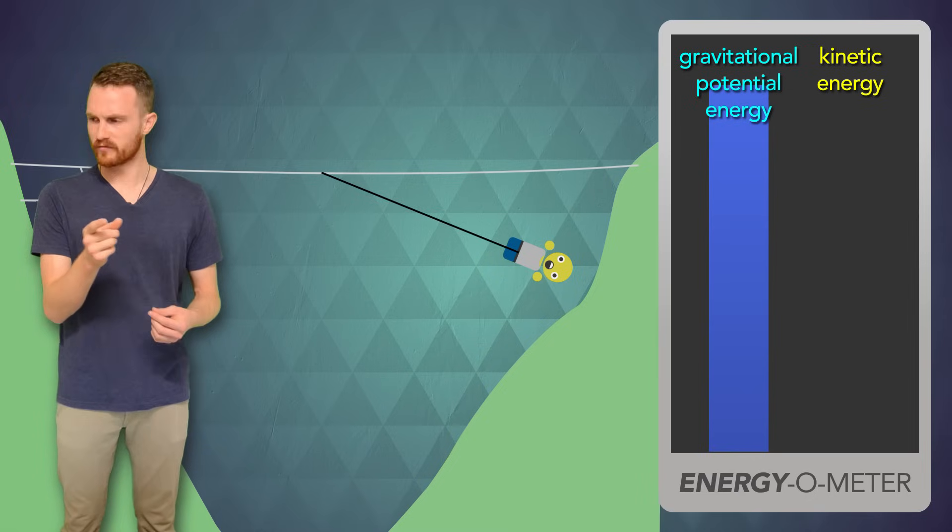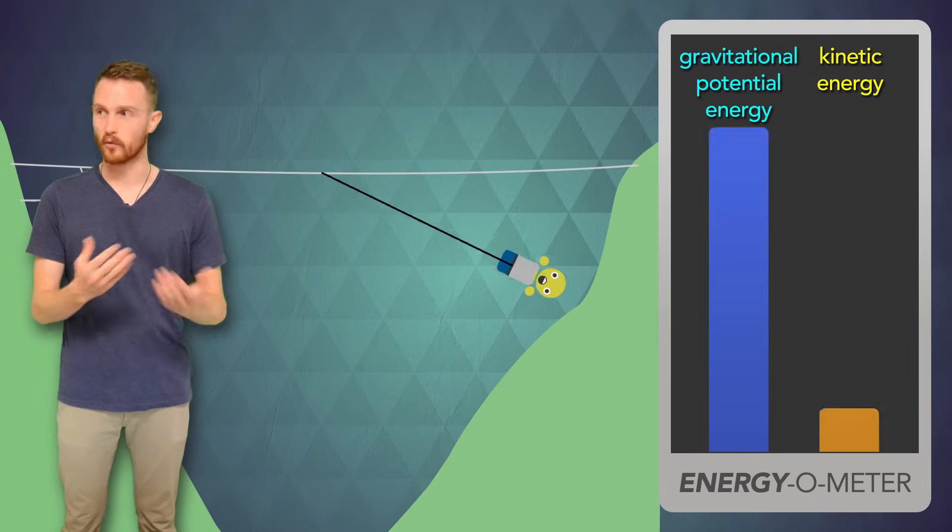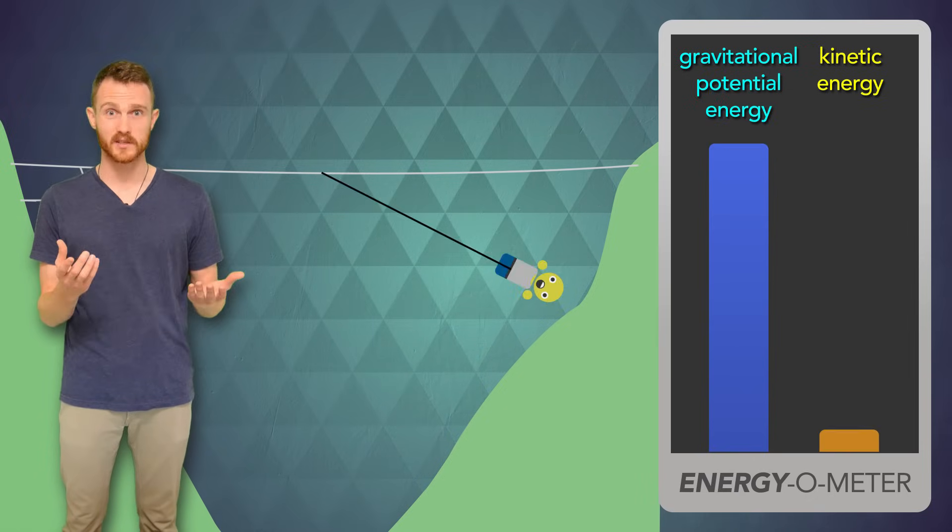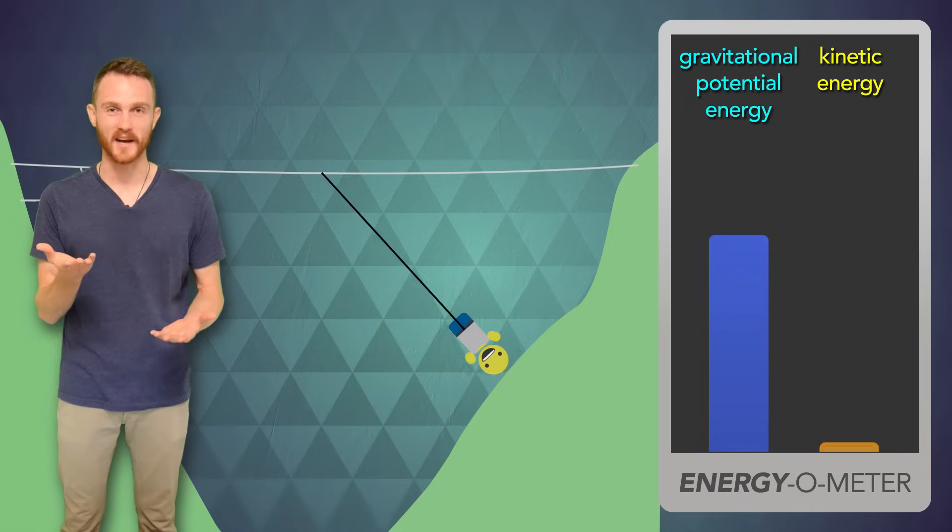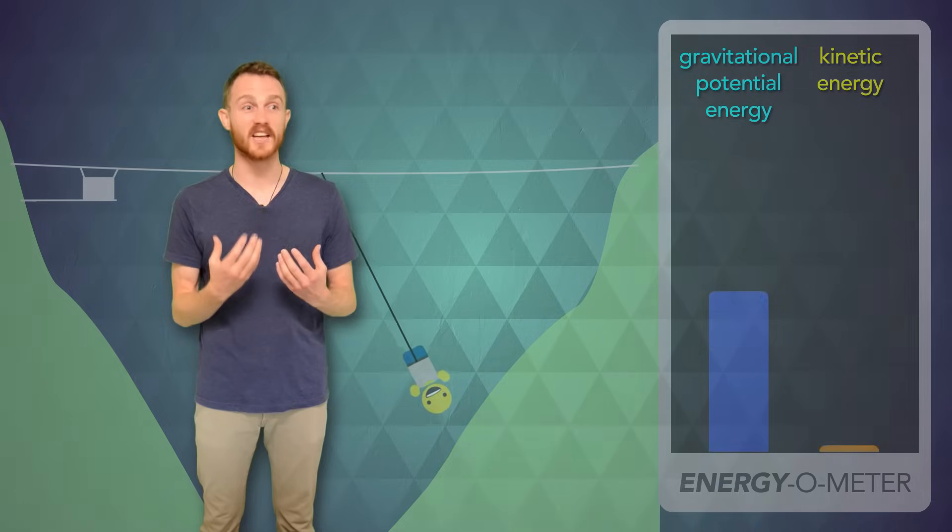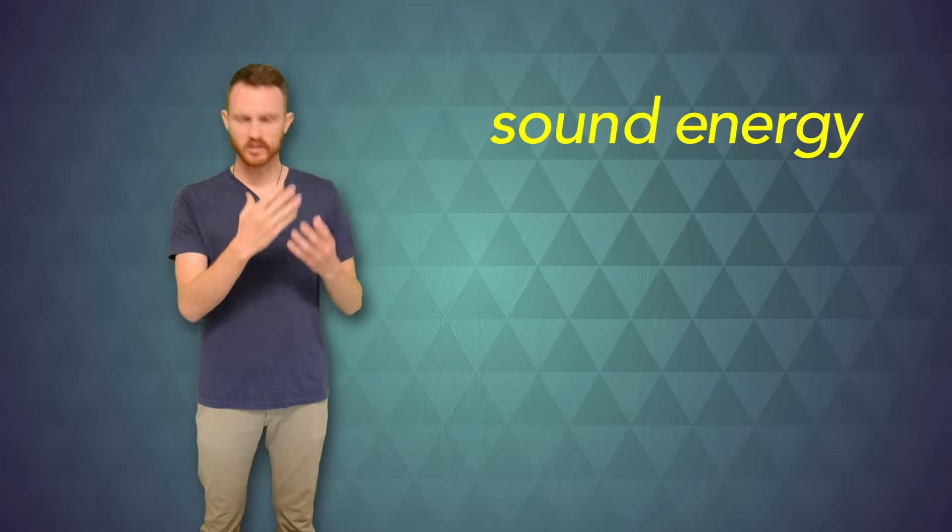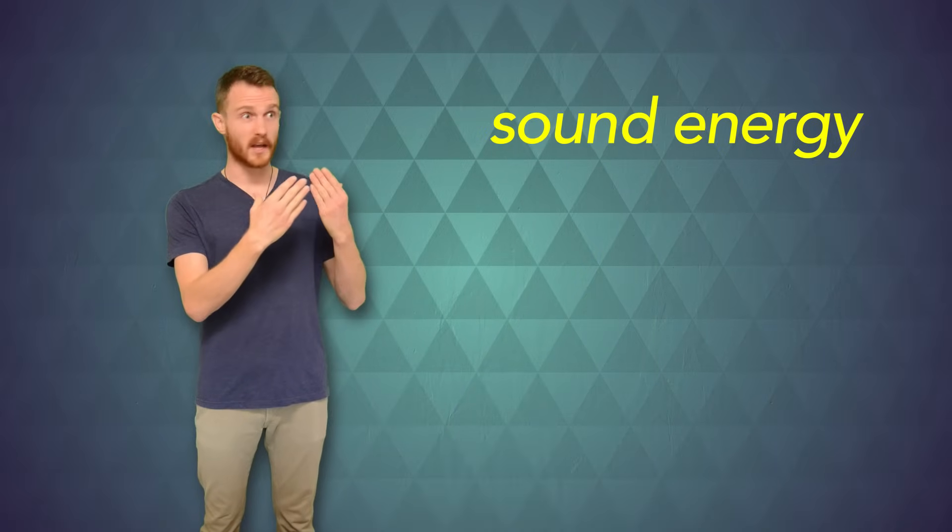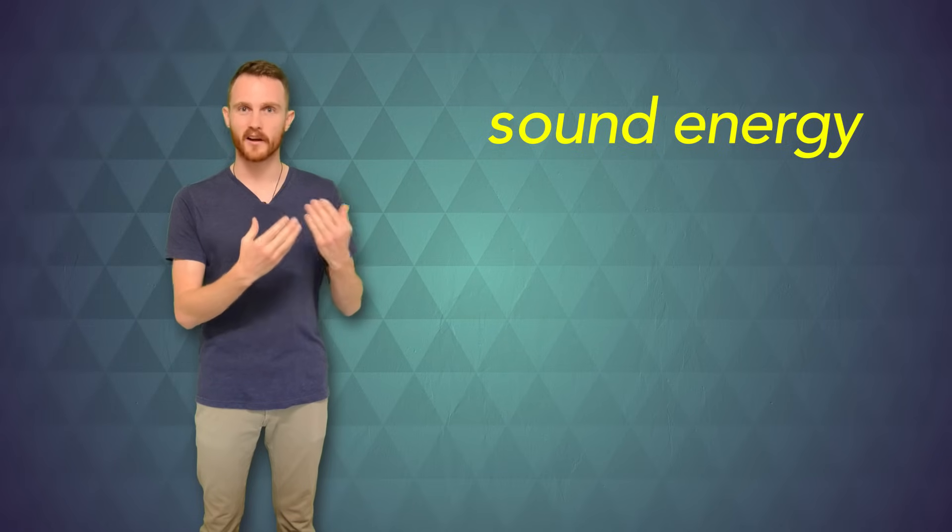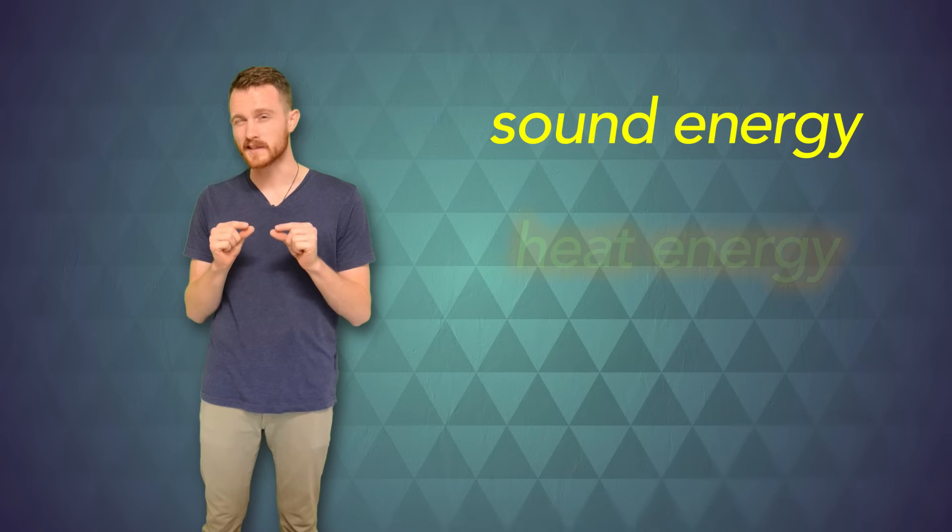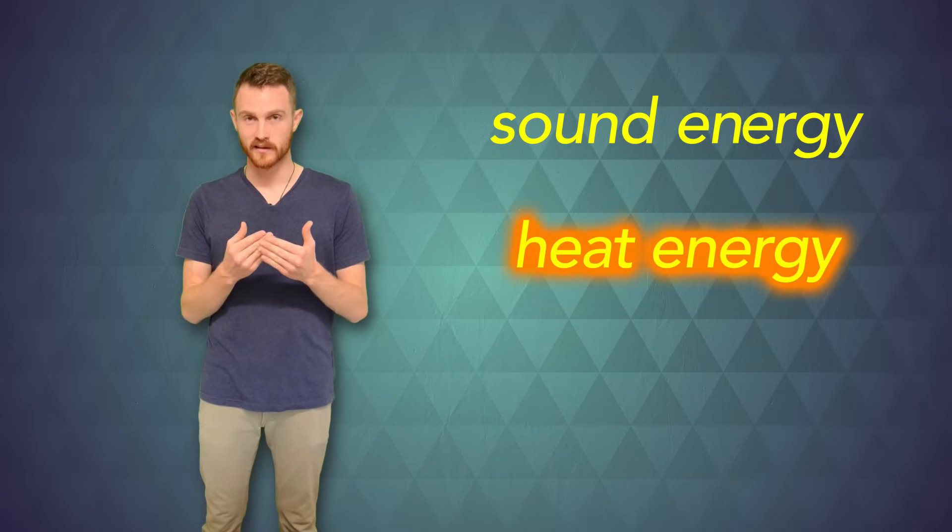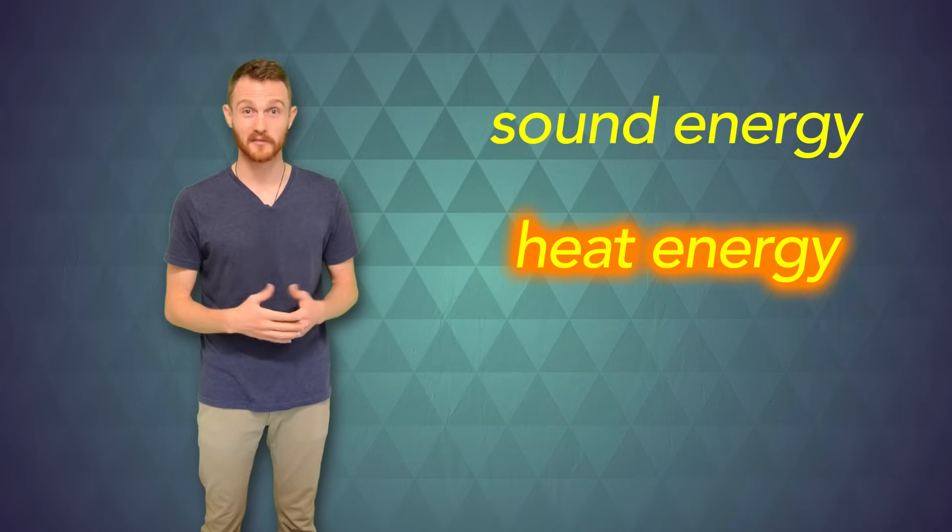Now I know what you're thinking. If energy can just change back and forth like that, wouldn't I just keep swinging forever? Well, you heard how noisy it was, right? I'm losing some of that energy as sound energy, which is also just the movement of air. So it's another kind of kinetic energy. I'm also making a little bit of heat by friction with the air. And heat is another form of energy.